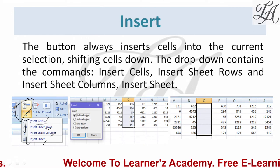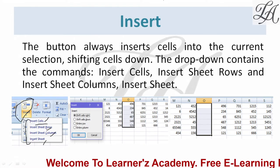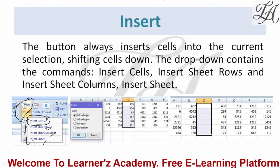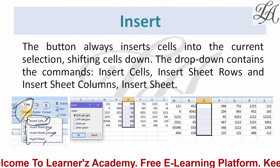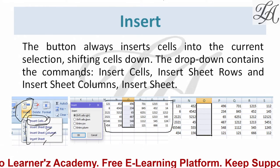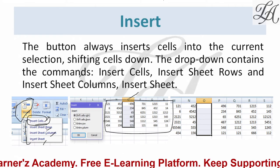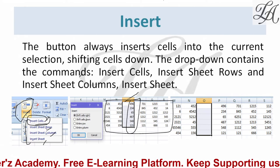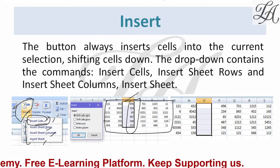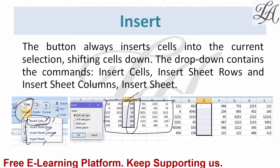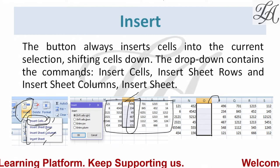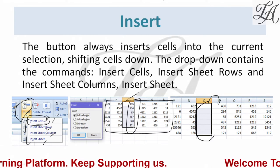What is Insert Cells? If you are working on a present sheet and you want to insert some cells, when you click on this command you will get four options: Shift Cells Right, Shift Cell Down, Entire Row, and Entire Column. For Shift Cells Right — the data you have selected will shift towards the right, and new cells will be inserted in that position. For example, values 496 and 234 are shifted towards the right, and cells are inserted.